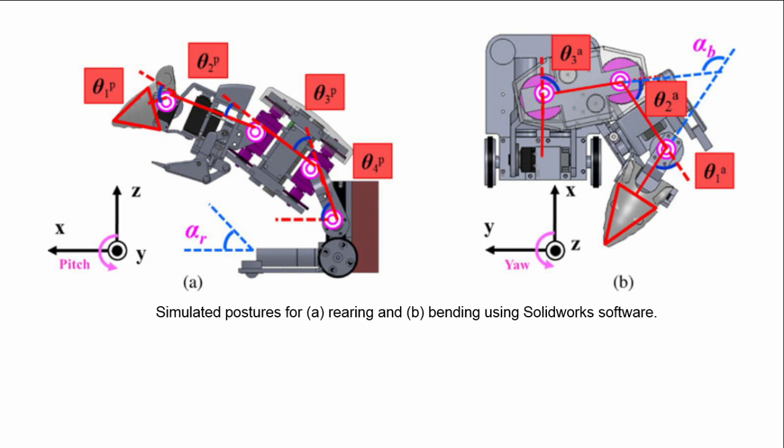In the simulation environment, the rearing angle is found to be αR less than 80 degrees and the bending angle αB less than 130 degrees in two directions. Thus, these two parameters satisfy the required constraint.